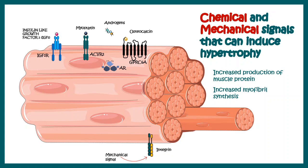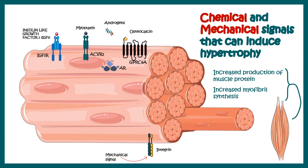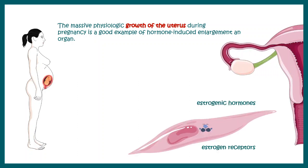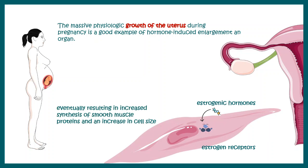All of these signals cause muscle cells to produce more muscle proteins and get bigger in size. Simply, there is an increase in myofibril synthesis, and all these phenomena lead to an increase in muscular size and muscular hypertrophy. The massive physiological growth of the uterus during pregnancy is another example — in that case, the smooth muscles are getting hypertrophied by hormones such as estrogen. Estrogen receptors are present in the uterine smooth muscles, and upon pregnancy, estrogenic hormone action leads to hypertrophy in these muscles.